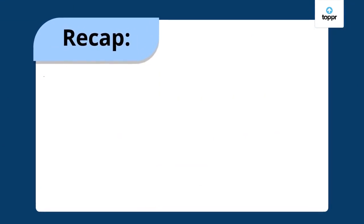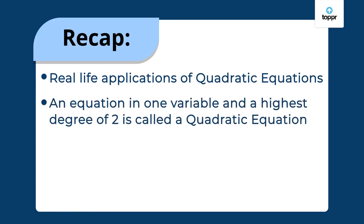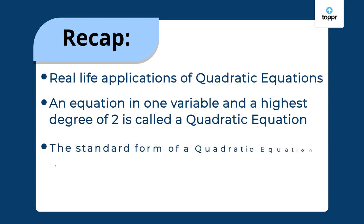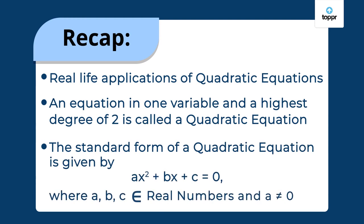Now that you know the definition of a quadratic equation and its standard form, let's do a quick recap. We looked at some real-life problems where we need to apply quadratic equations. We defined a quadratic equation as an equation in one variable with a degree of 2. And finally, we learned that the standard form of a quadratic equation is AX² + BX + C = 0, where A, B, and C belong to real numbers and A is not equal to 0.